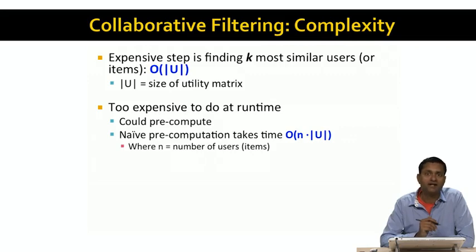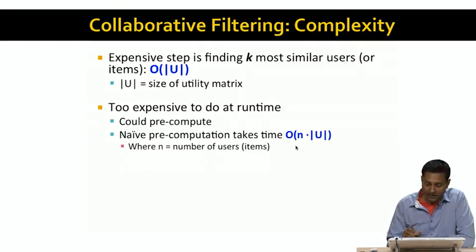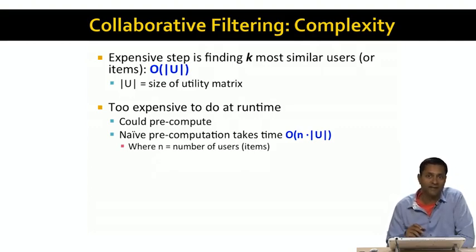But even a naive pre-computation can take a very long time. Suppose there are n items and we're doing item-to-item collaborative filtering. For each item, we'd have to compute its similarity to every other item. So the complexity is the product of the number of items and the size of the utility matrix. Since both can be very large, the product is clearly a very large number, and even a naive pre-computation can be too expensive to do in practice.